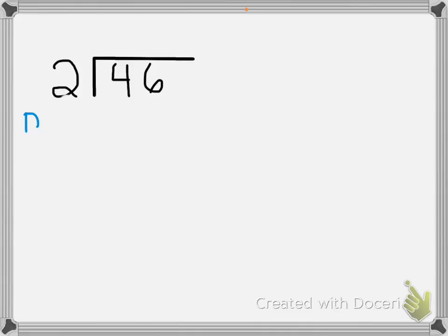Alright, let's get started. We start by writing DMSB's down the side, because this helps us keep track of what step we are at in the process. Because that's the most confusing part, is knowing, okay, what do I do now?